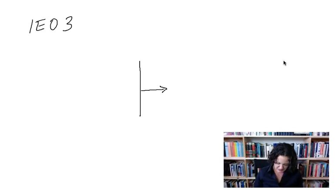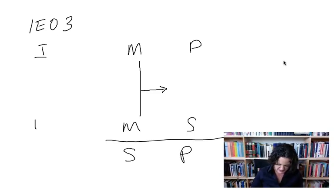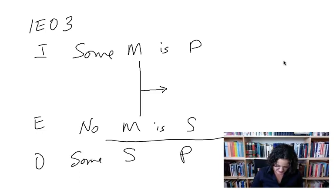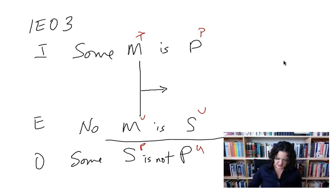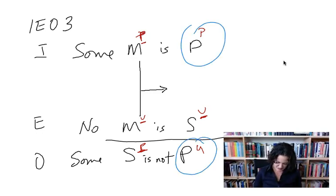IEO Figure 3: In Figure 3, the M terms come first. The syllogism reads: some M is P (I), no M is S (E), some S is not P (O). Assigning u's and p's: PP, UU, PU. Checking S terms — good. Checking the middle term — good, universal at least once. But again, the P term is particular in the premise and universal in the conclusion: illicit major. IEO Figure 3 is invalid.